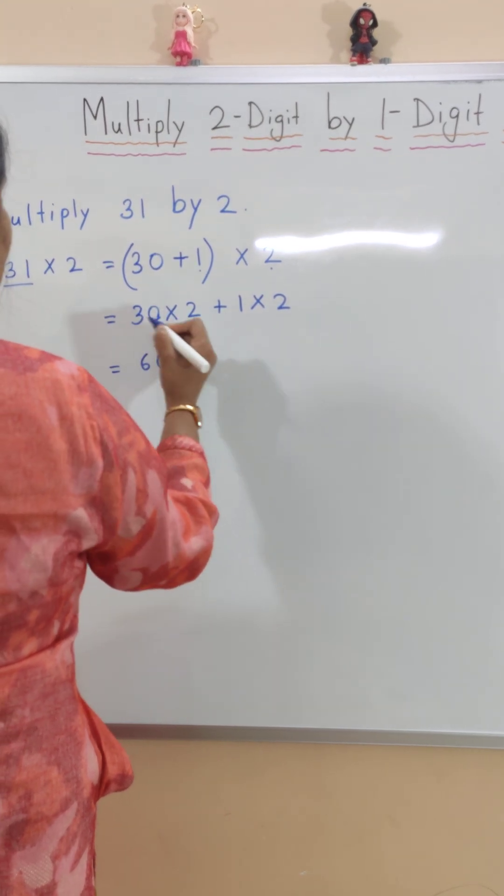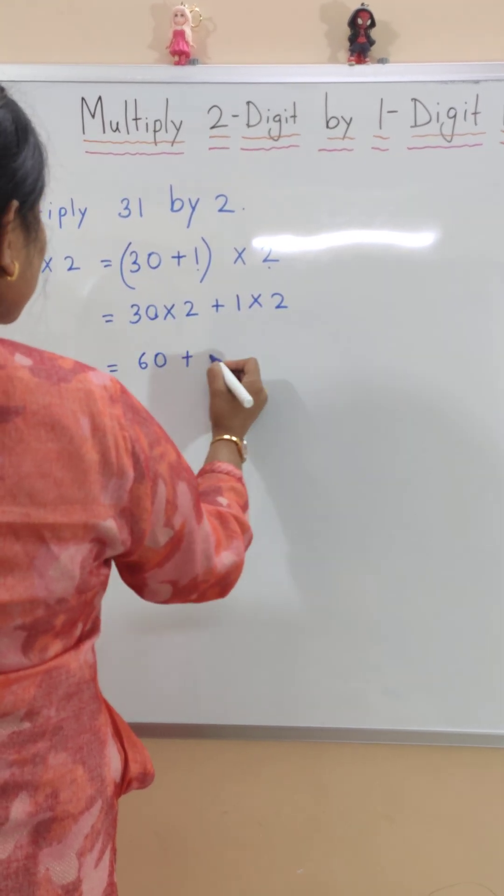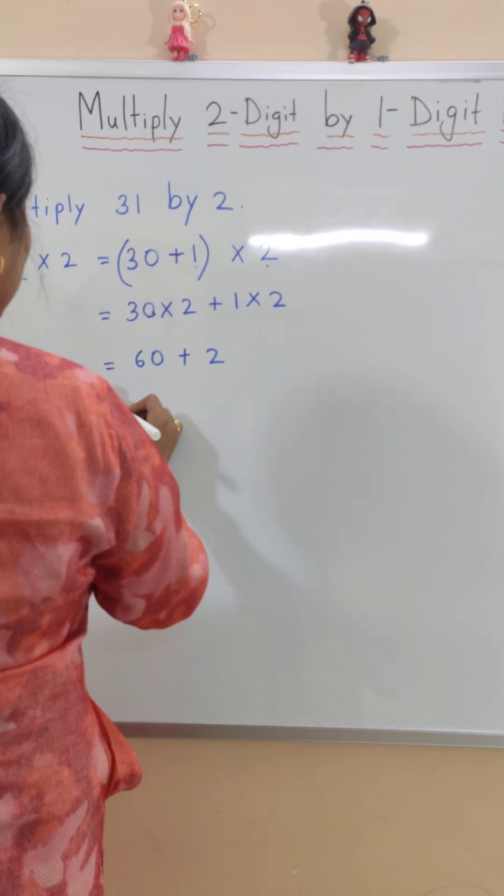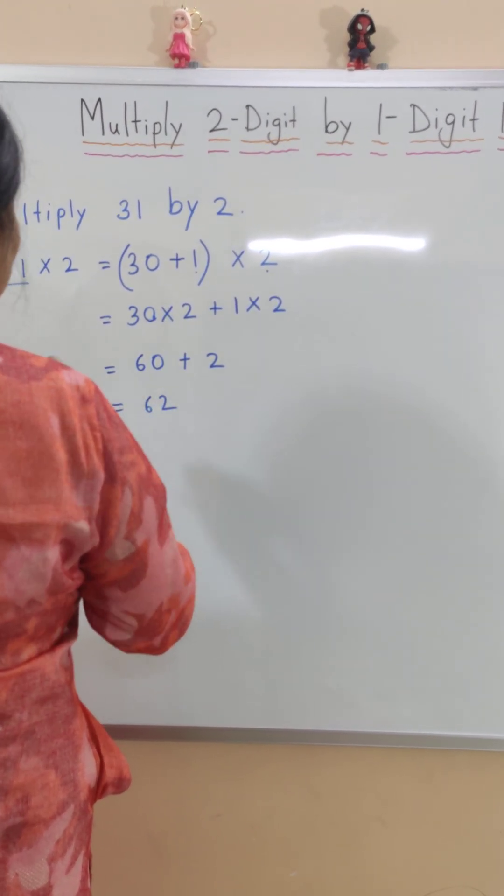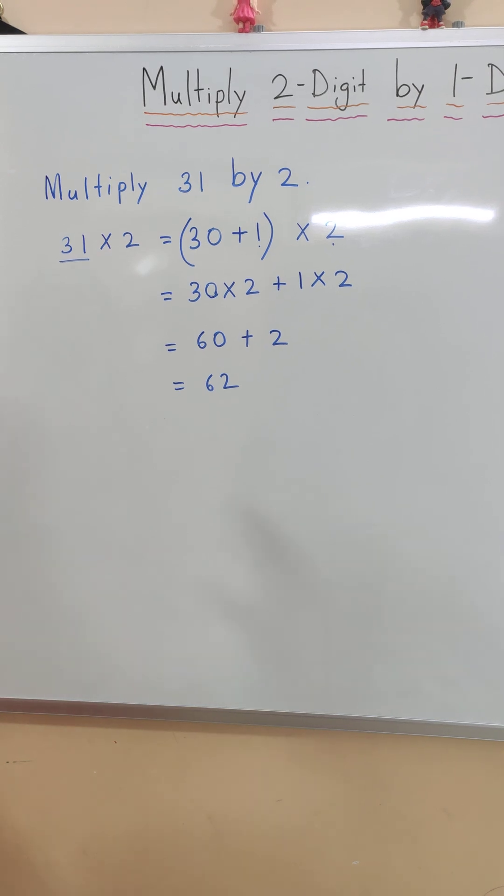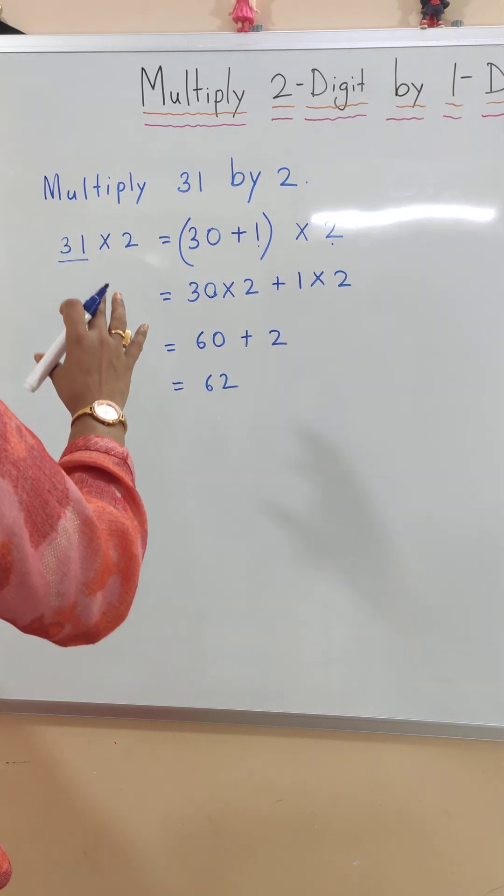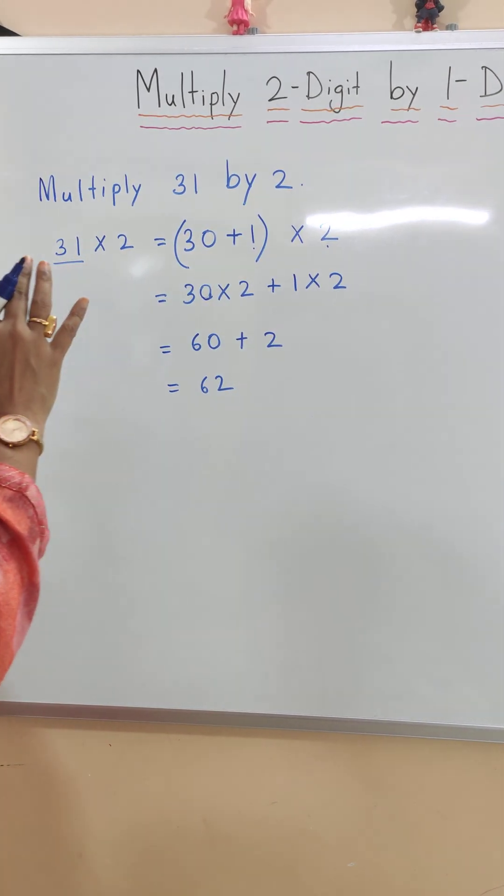60. Now plus, 1 times 2 equals 2. So 60 plus 2 is 62. This is how we do multiplication using the expanded form of the multiplicand.